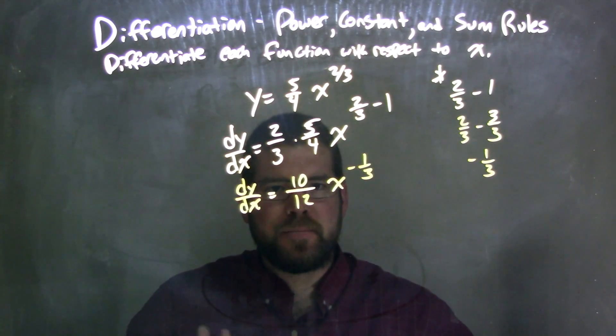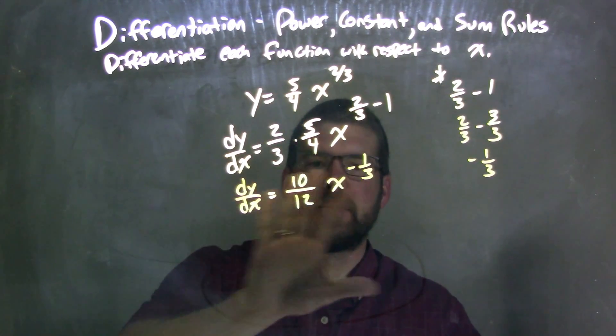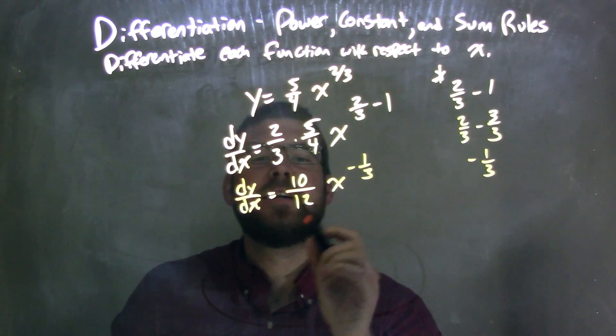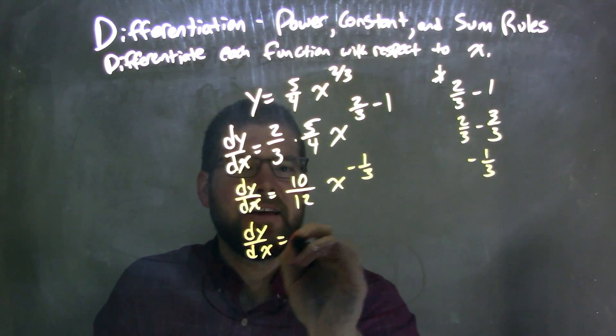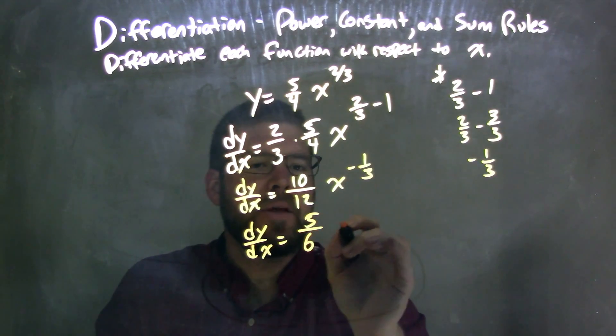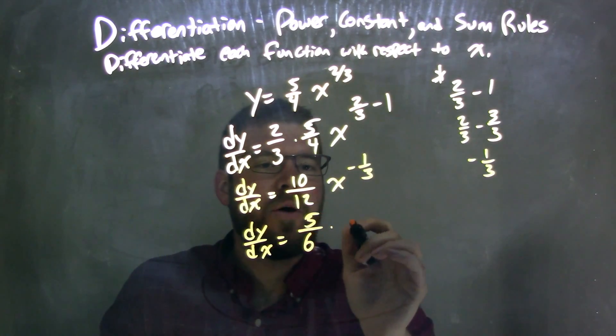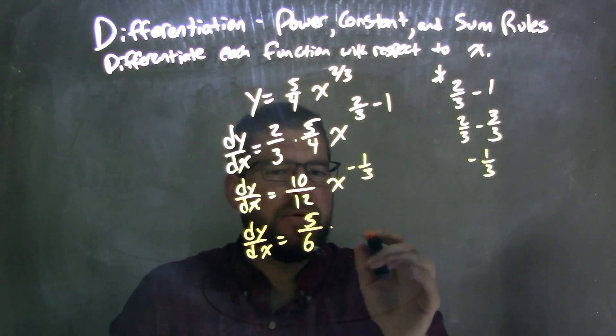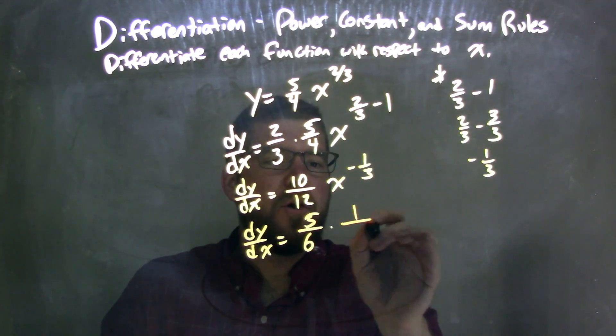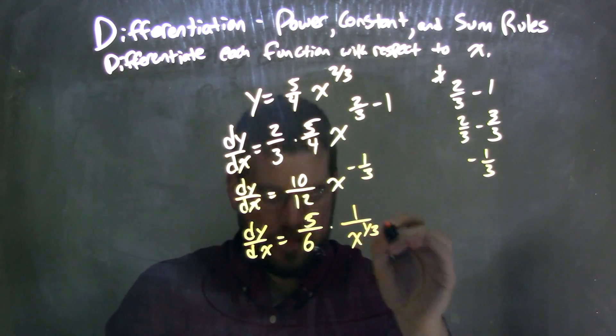Now here, this is what becomes tricky. I'm going to simplify 10 over 12 to be 5 over 6. So we have dy dx equals 5 over 6 times—well, x to the negative 1 third power is the same thing, right? We don't like negative exponents in our final answer. So it's 1 over x to the 1 third power.